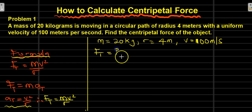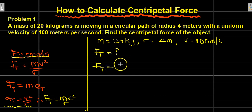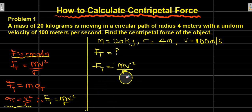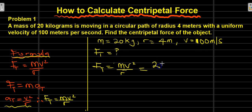To find F of t — this is the unknown — we use the formula: F of t is equal to mv² over r.